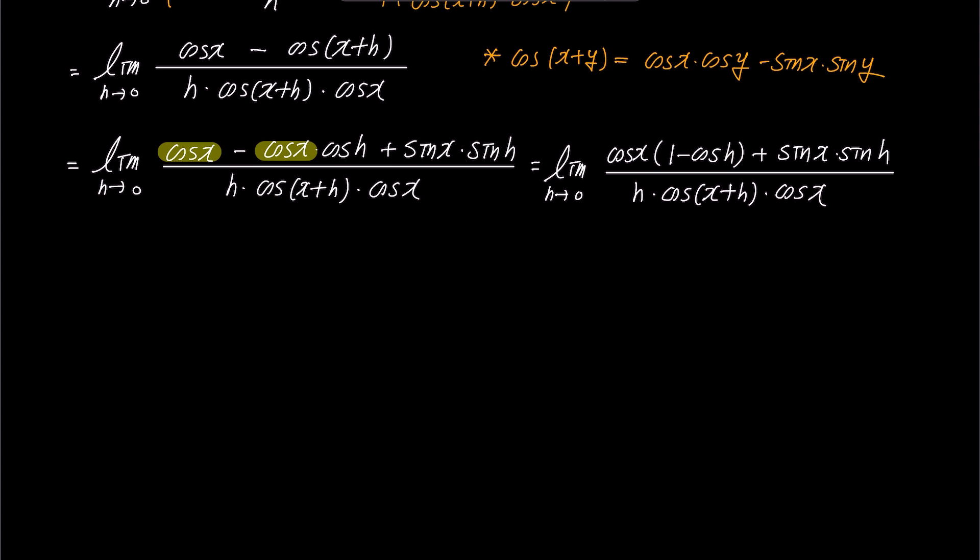This fraction can also be split into two separate fractions. Then, as h approaches 0, the limit can be expressed as sum of cosine x times 1 minus cosine h over h times cosine x plus h times cosine x, and sine x times sine h over h times cosine x plus h times cosine x.